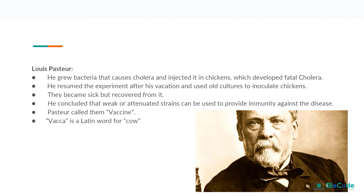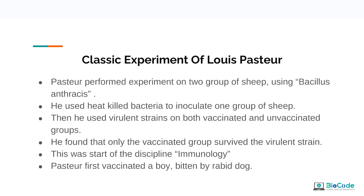In classic experiments, Louis Pasteur used Bacillus anthracis — heat-killed bacteria — to inoculate one group of sheep, then used a virulent strain on both vaccinated and unvaccinated groups. Only the vaccinated group survived the virulent strain, and that was the start of modern recipient immunology.